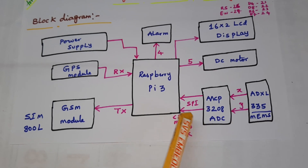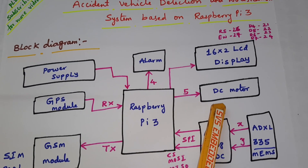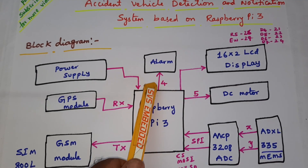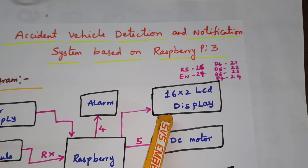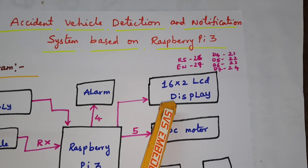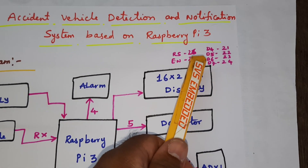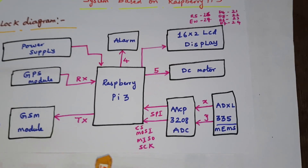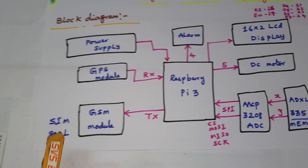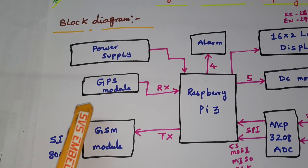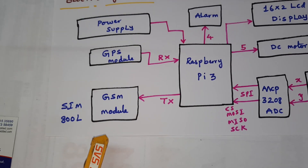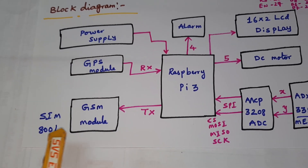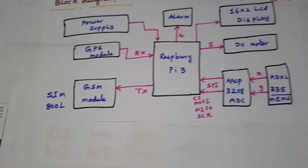The MCP3208 works under SPI protocol. One engine is connected with the fifth pin, the alarm is connected with the fourth pin, and a 16x2 LCD display is connected with RS, Enable, D4, D5, D6, D7 on GPIO pins 26, 27, 21, 22, 23, 24. The GPS module is connected with the RX pin, and the GSM modem SIM800L is connected with the TX pin.